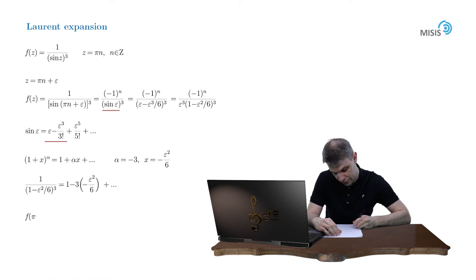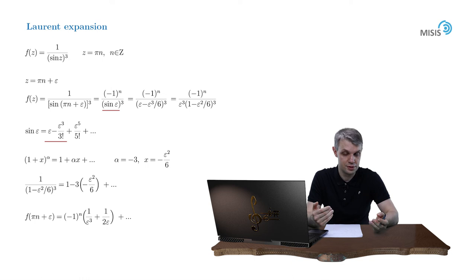And as a result, we obtain the following expansion. Negative 1 to the power of n, 1 over epsilon cubed plus 1 over 2 epsilon plus and so on. The next terms are always regular in epsilon, so they are of no interest to us. But this, what we obtained, is precisely the singular part or the principal part of our Laurent expansion, because both of these terms are singular.